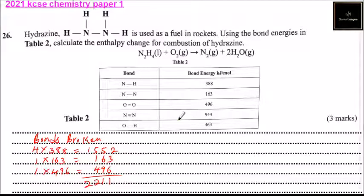From there, we go to the right side - bonds formed. One of the bonds that is formed is nitrogen and nitrogen. So we say it is 1 multiplied by 944. The nitrogen triple bond is 944, so that gives you 944.